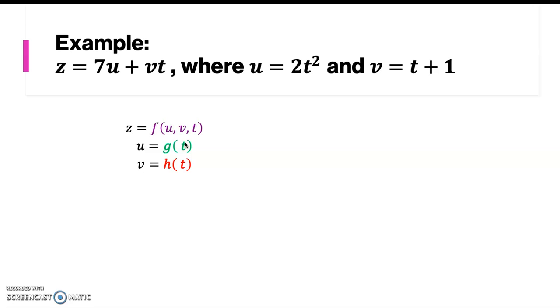If we draw it as a channel map, it is shown as follows. So we have t indirectly affect the change in z through u and v, and t directly affect the change in z.